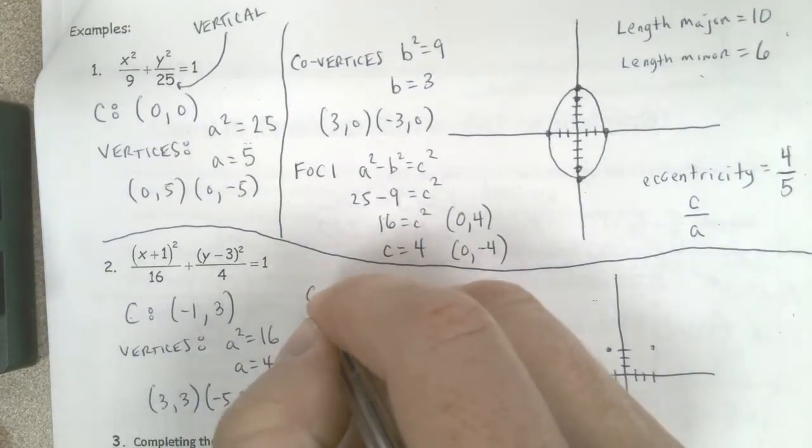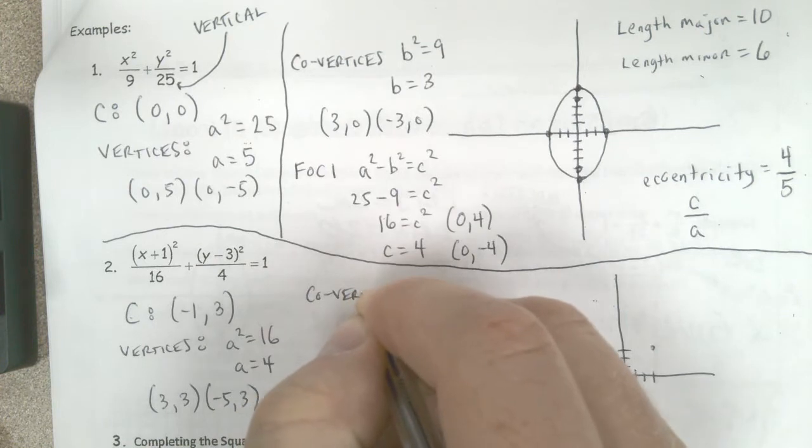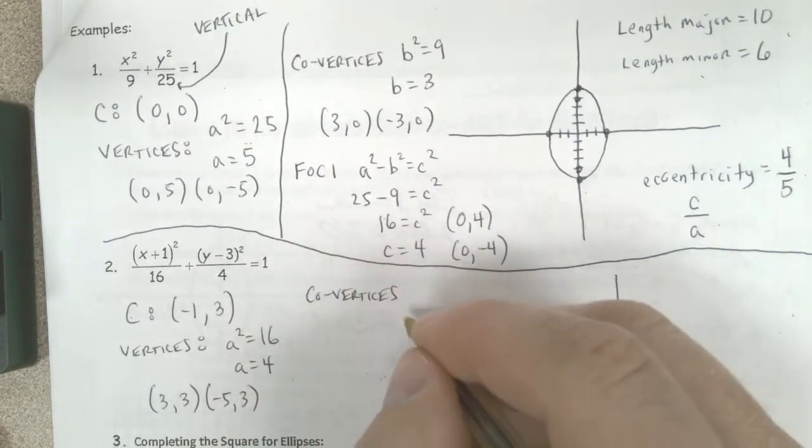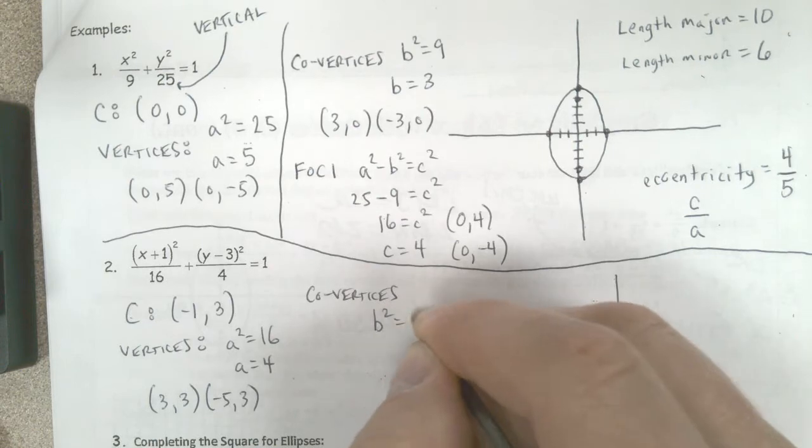My co-vertices. We know that b squared is going to be equal to 4 in this case. So b is going to be equal to 2.